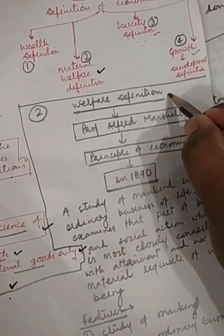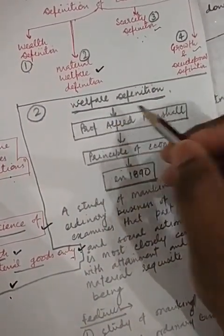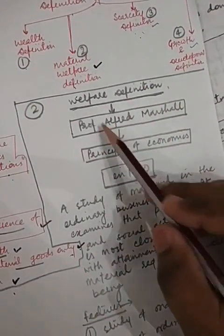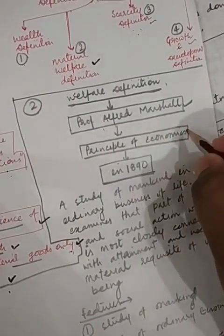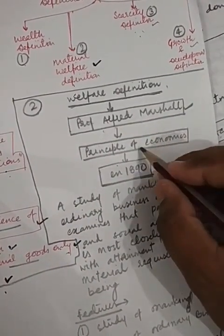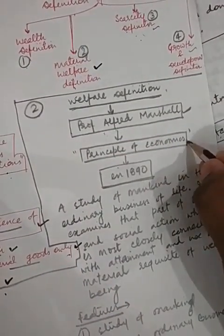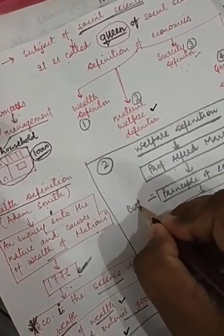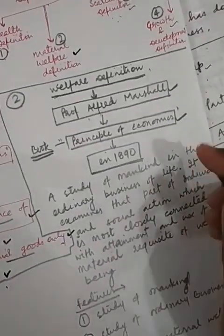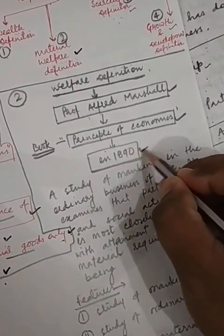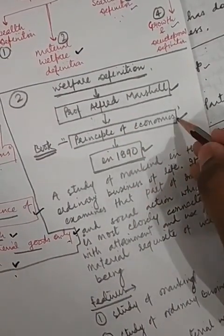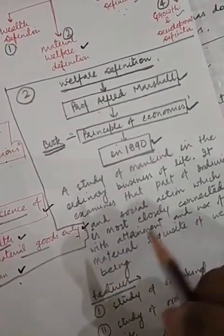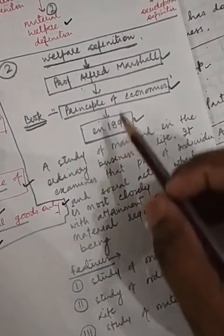Now, welfare definitions. The welfare definition is given by Professor Alfred Marshall. In his book — the name of the book is "Principles of Economics" — written in 1890, Professor Marshall gives the definition of material welfare.